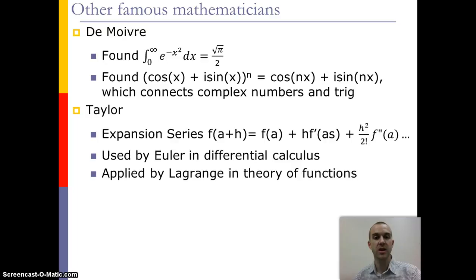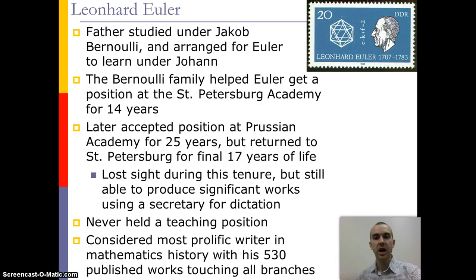Taylor created the expansion series, which was used by both Euler and Lagrange later in the mathematics that they completed. Now Euler was one of the most famous mathematicians that really touched on a lot of different branches of math. And his contributions are seen in many different areas.